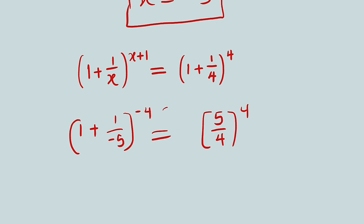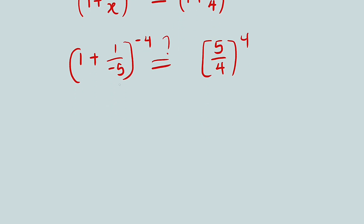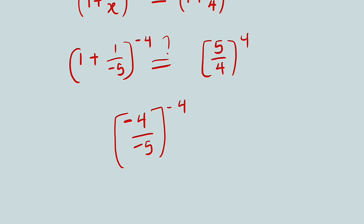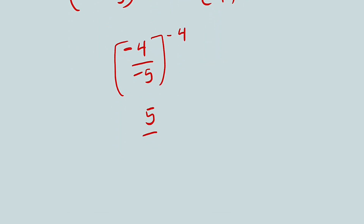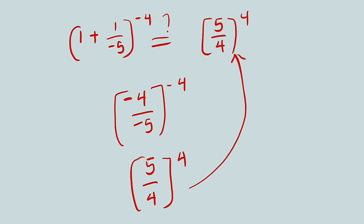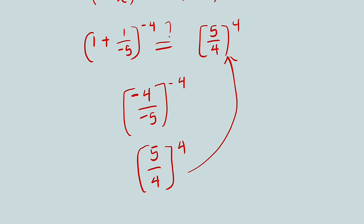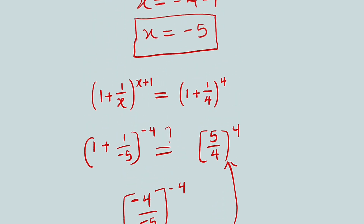So we have negative 4 as the exponent. On the left-hand side, taking 1 divided by x: multiplying gives us negative 5, adding 1 gives us negative 4. So we have negative 4 divided by negative 5, raised to the power of negative 4. The negatives cancel, leaving 4 over 5. But our exponent is negative, so to make it positive we take the reciprocal of 4/5 by flipping it, giving us 5/4 — and the power becomes positive 4. Observe — they are exactly the same. Since they are the same, the real value of x is negative 5.